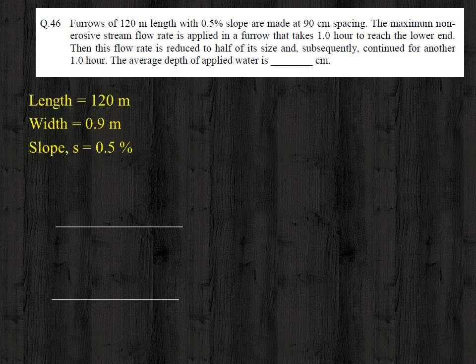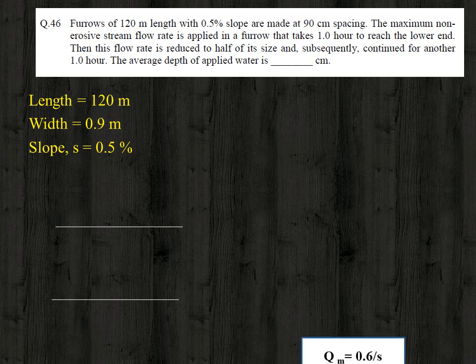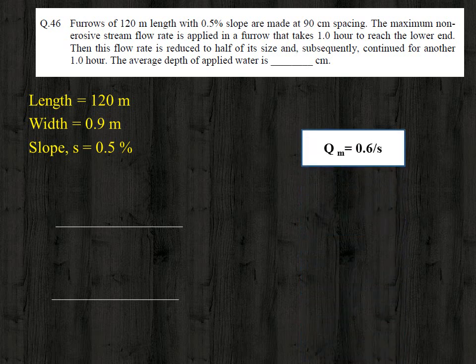This question is based on furrow irrigation. The length of the furrow is 120 meter, width is 0.9 meter, and slope is 0.5 percent. To find the maximum non-erosive stream flow, we use the empirical equation: Qm = 0.6 / S, where Qm is the maximum non-erosive stream flow in liters per second and S is the slope in percent.